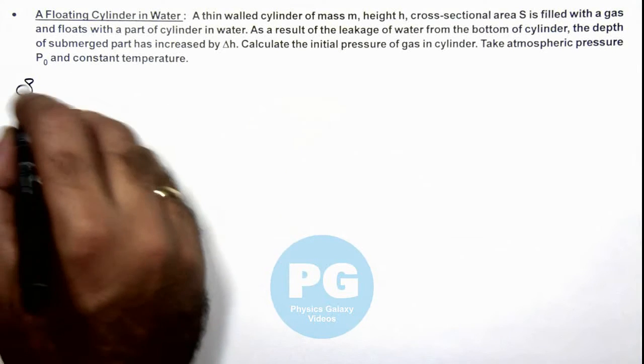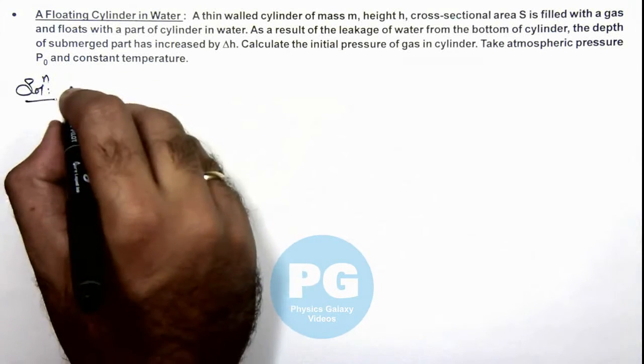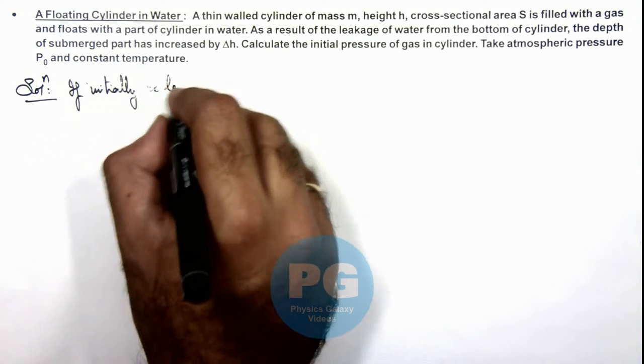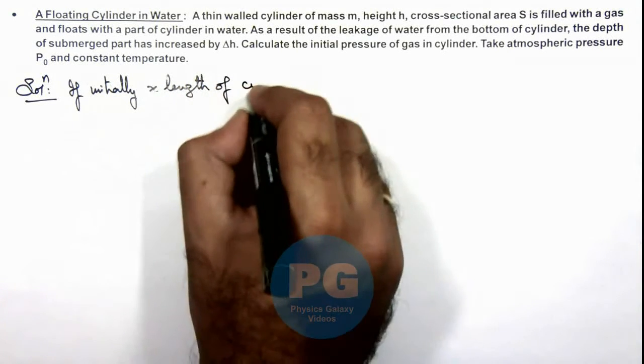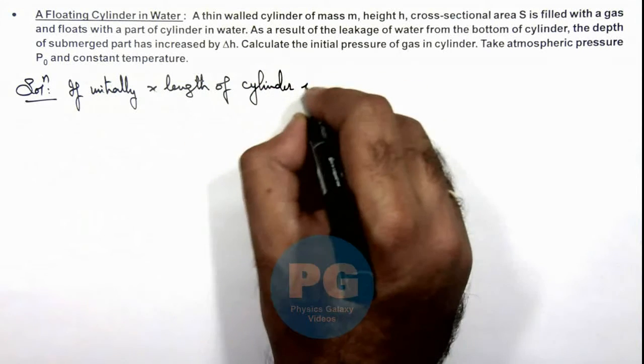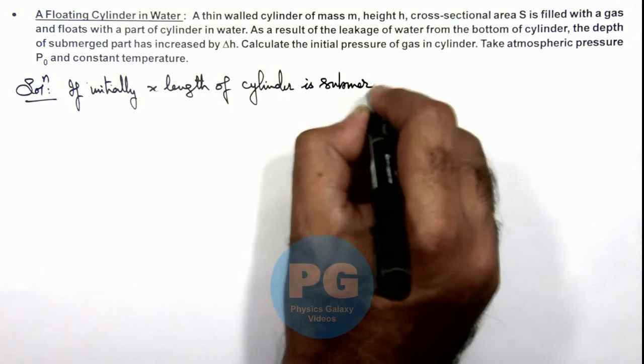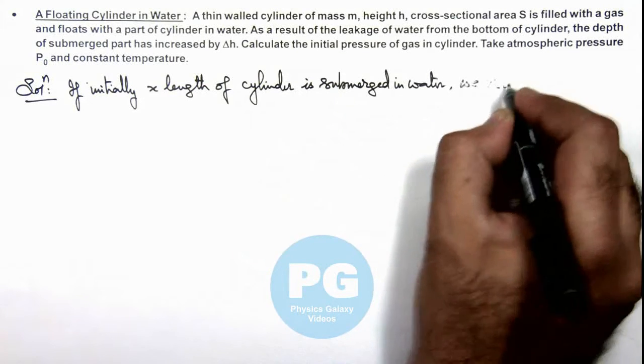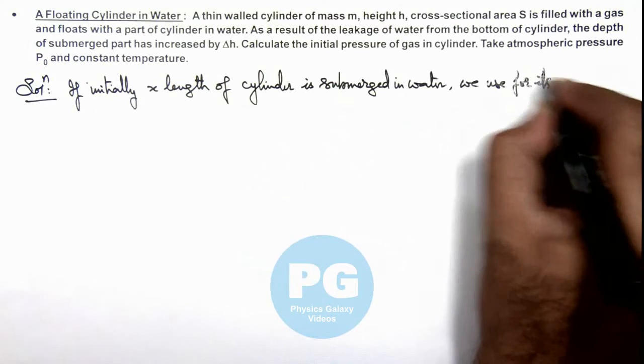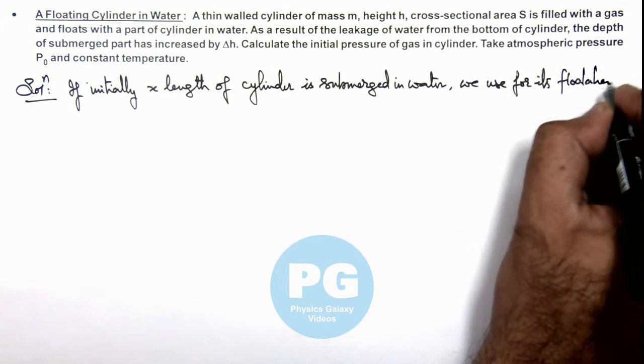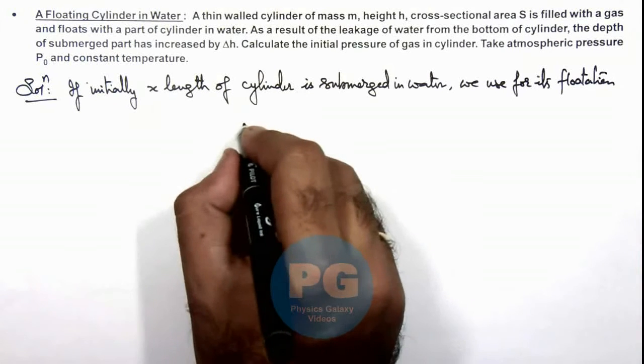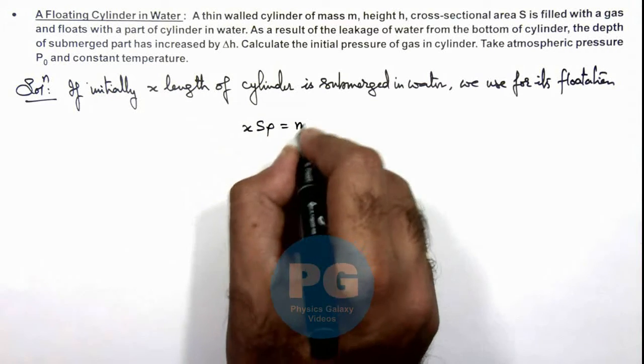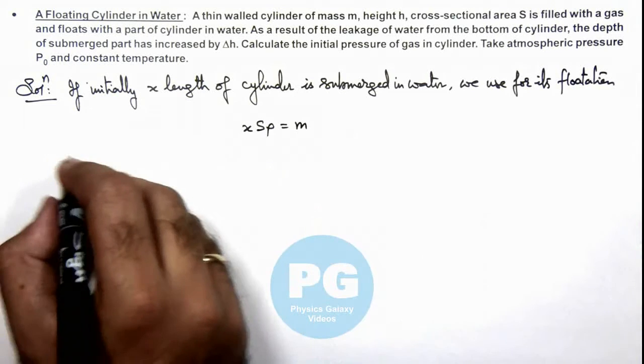Now in this solution here we can write: if initially x length of cylinder is submerged in water, then we use for its floatation, because cylinder is floating, here we can write the weight of liquid displaced is x·S·ρ and that should be equal to the mass of the cylinder.